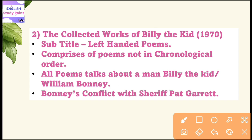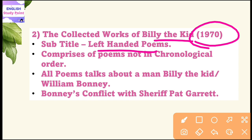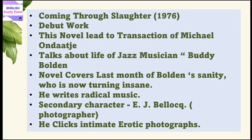Another work is titled The Collected Works of Billy the Kid, published in 1970, with the subtitle Left-Handed Poems. This work is more like a verse novel containing a series of poems not written in chronological order — they appear unstructured. All the poems talk about a man named Billy the Kid, whose actual name is William Bonney, covering events in his life and his conflict with Sheriff Pat Garrett.